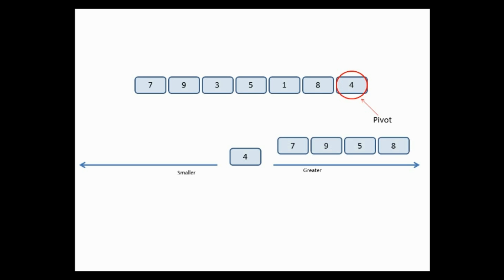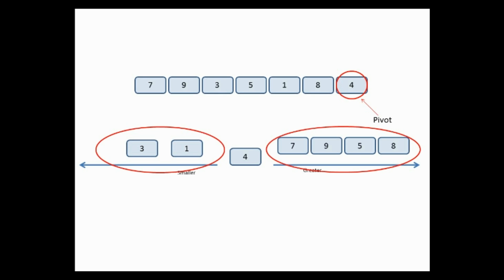In our array, 7, 9, 5, and 8 are greater than the pivot so they should be placed to its right, and 3 and 1 are smaller so they are placed on the left side. Ordering within each side does not matter. The list can then be divided into two sub-lists, and the same steps are applied to each sub-list until it contains exactly one element.